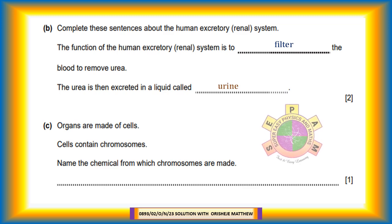Question 1c: Organs are made of cells. Cells contain chromosomes. Name the chemical from which chromosomes are made. Chromosomes are made from deoxyribonucleic acid, DNA.